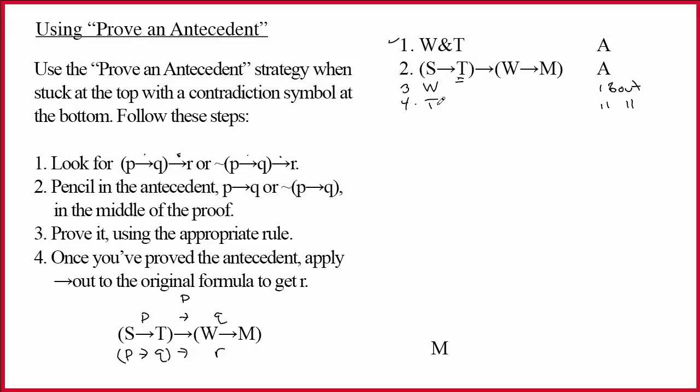And so, when I notice that I have T on line four, I think to myself, I could jump in and attempt the Prove an Antecedent strategy right now, even without first assuming the opposite of M. And so, what I'm going to do is just pencil in S arrow T into the middle of my space right now.